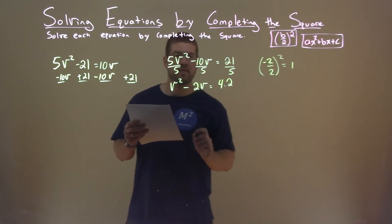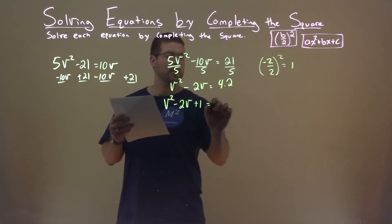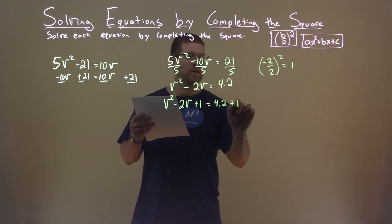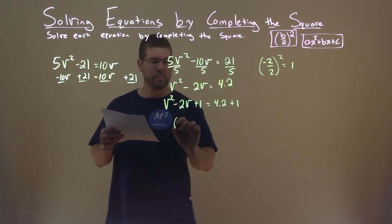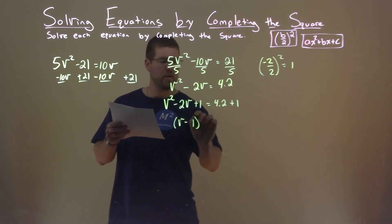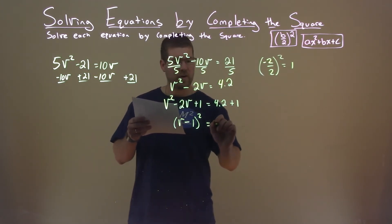We're now going to add 1 to both sides of the equation. v squared minus 2v plus 1 equals 4.2 plus 1. Left-hand side is a perfect square, so we have v minus 1 squared equals 5.2.